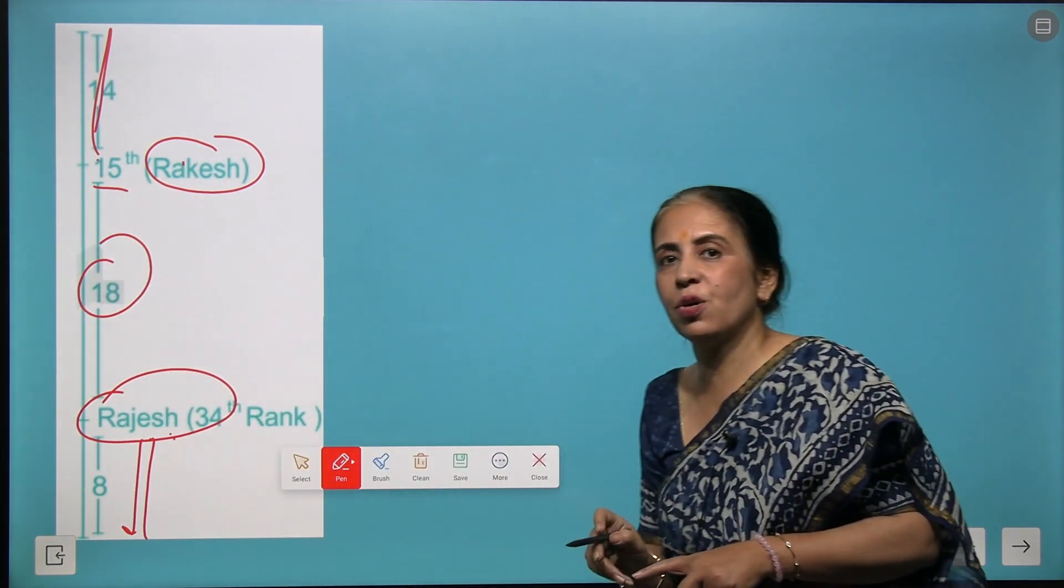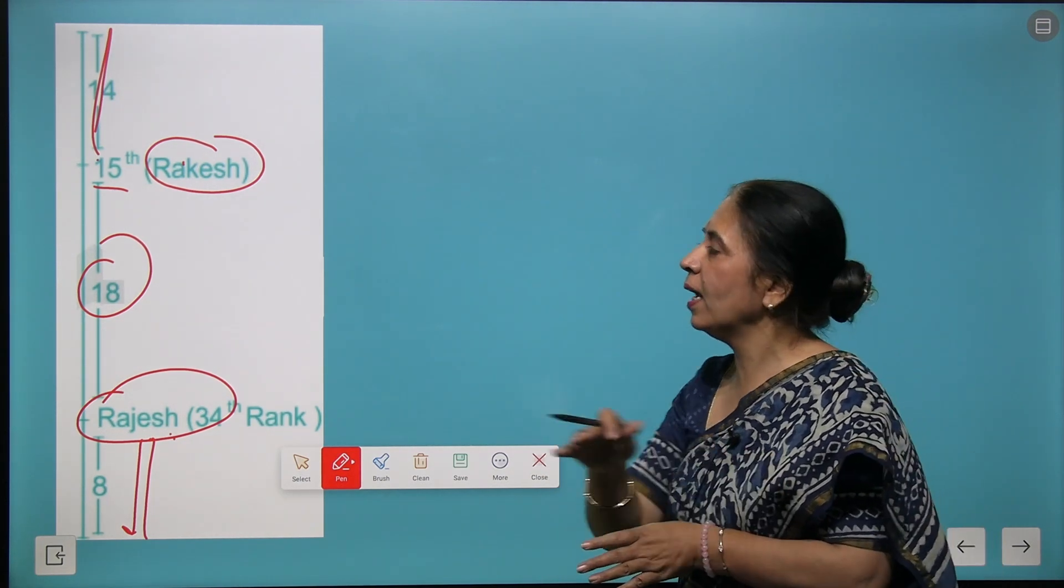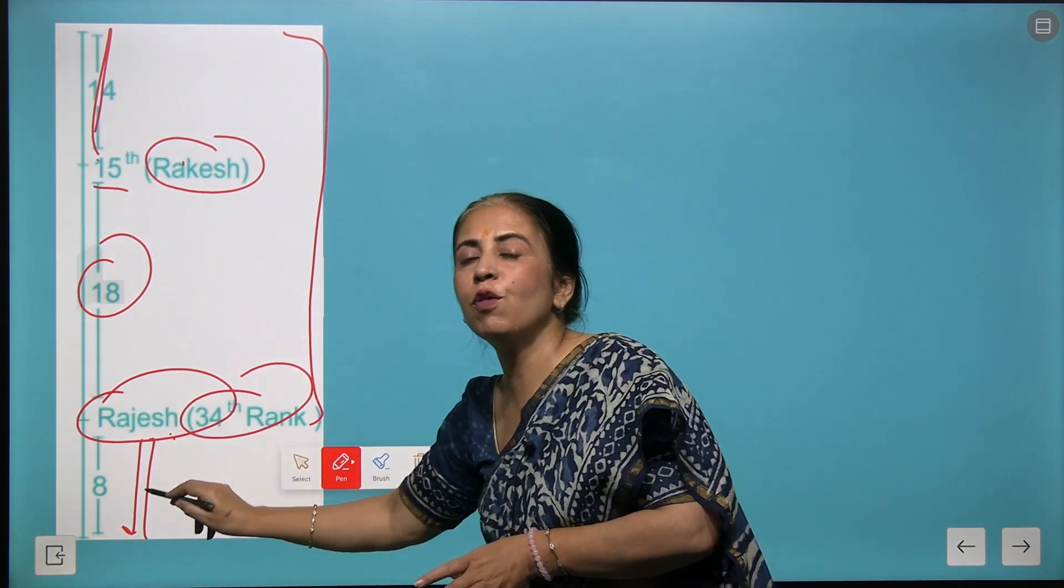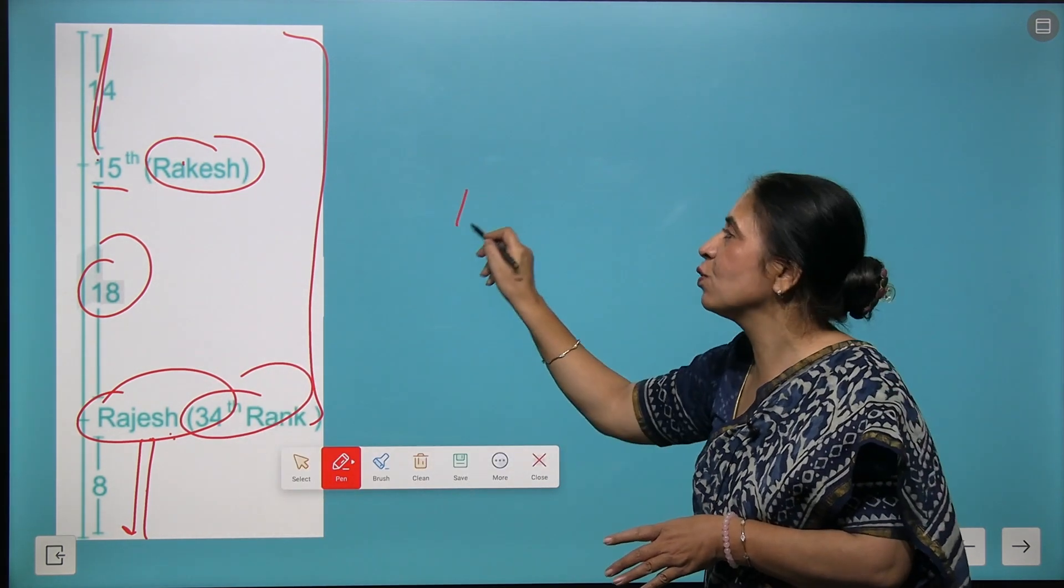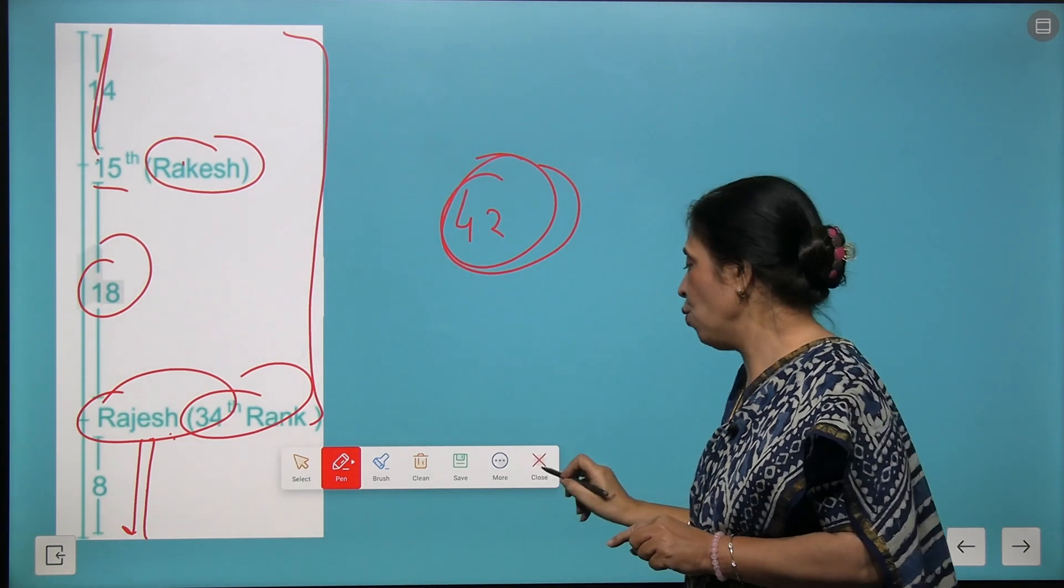In between Rajesh and Rakesh are 18 children. If you want to know how many total children are there, we can directly conclude that 14 plus 18 plus 8 makes 42 total children standing in the row from top to bottom.